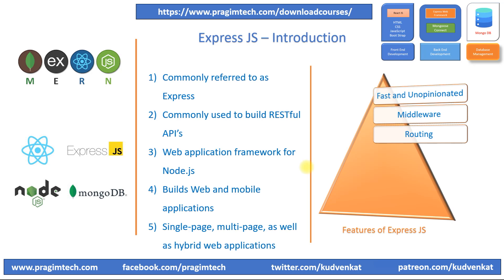Express has a robust routing system that allows developers to define routes for different HTTP methods such as POST, PUT, DELETE, and URL patterns. This makes it easy to handle complex routing requirements.